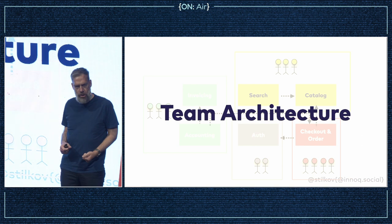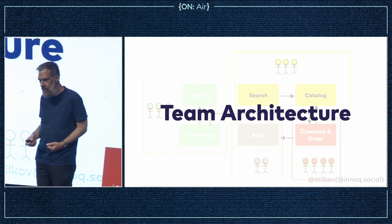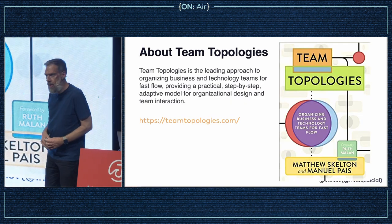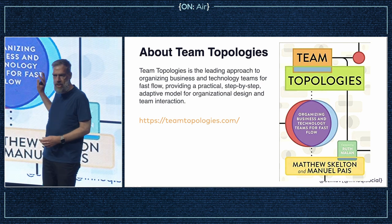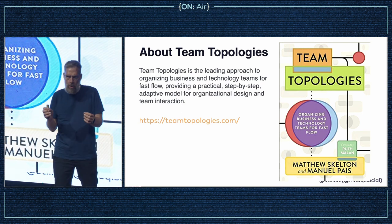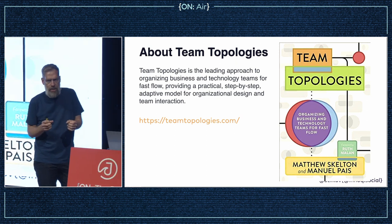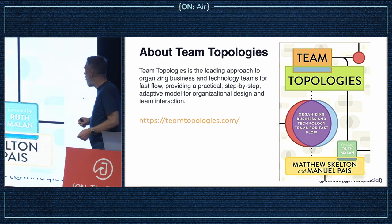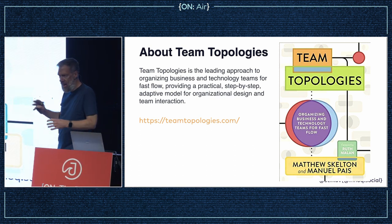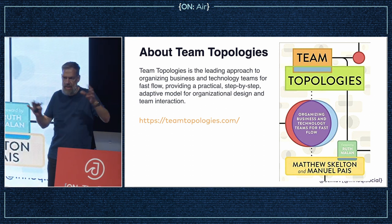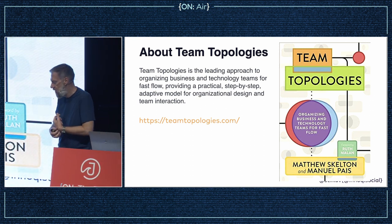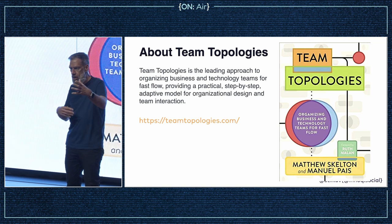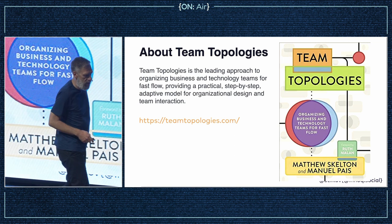We could call this team architecture. I wish I had written a book about it, but somebody else did — the Team Topologies people did a fantastic job of looking into the role team organization plays in building successful systems. I highly recommend that book. It talks about different kinds of teams — a team taxonomy — and some collaboration models between them.